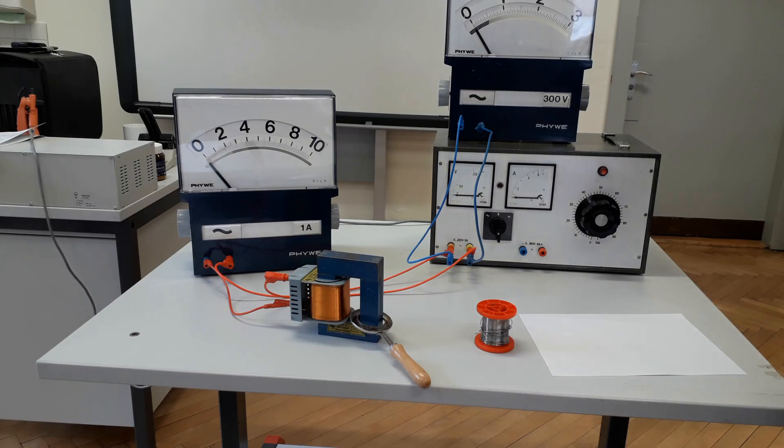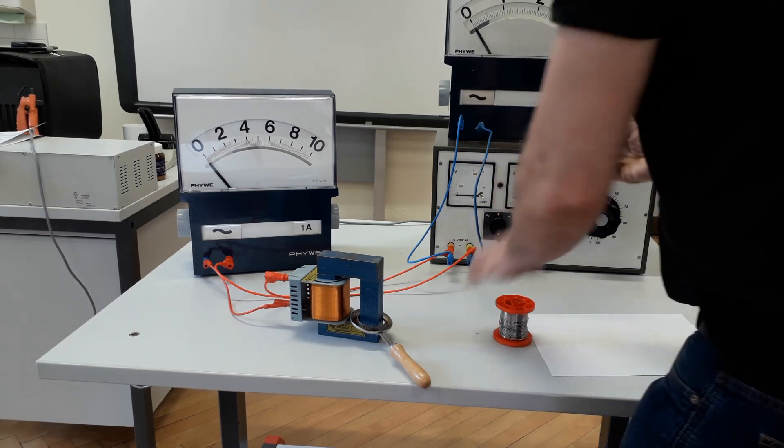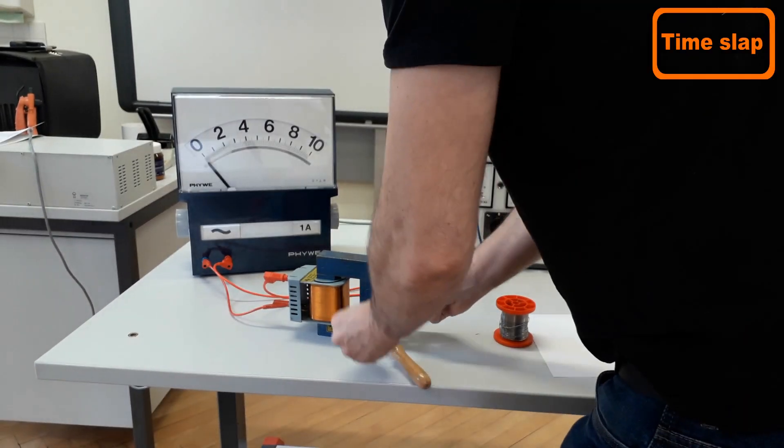In this experiment, we melt solder. What you see is an input winding with a high number of turns and a metal melt channel into which we put the solder.